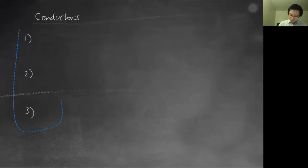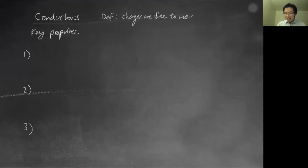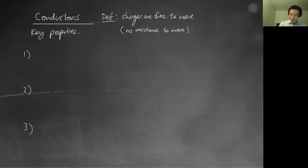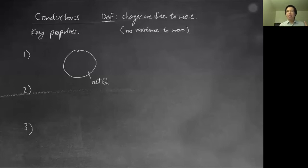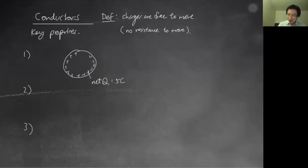There are three key properties you need to know about conductors. First, the definition: a conductor is where charges are free to move — ideal conductors have essentially no resistance, no inertia to move. Property one: if there's a net charge on a conductor, all net charges will always reside on the outer surface. Net charge zero means equal positive and negative; net charge of five coulombs means there are five coulombs more positive ones than negative ones.